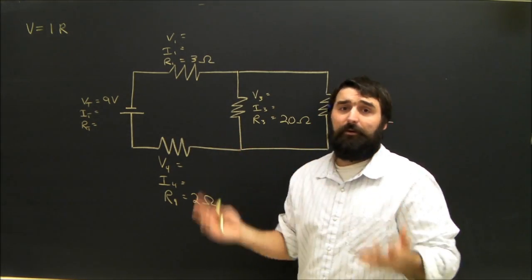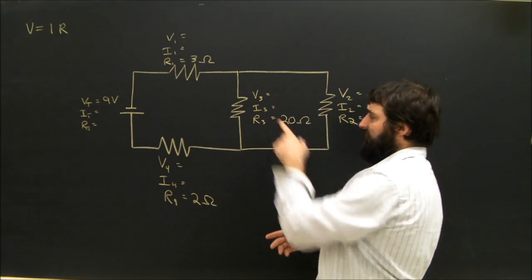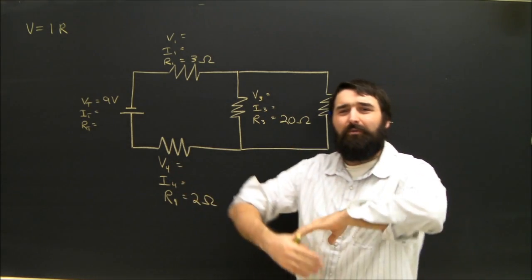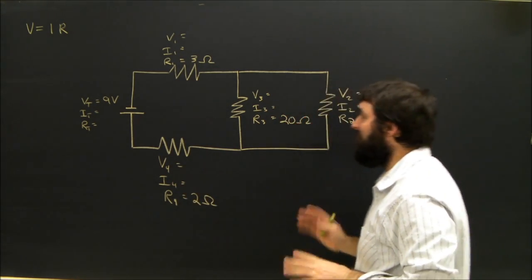The question, who knows what the question might be? What's the current on resistor 3? What's the voltage on 4? We're just going to solve the whole circuit and find absolutely everything.